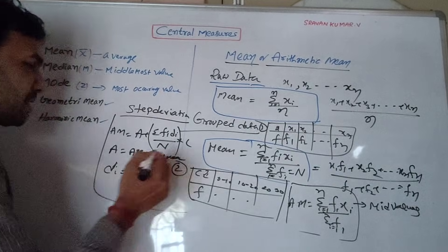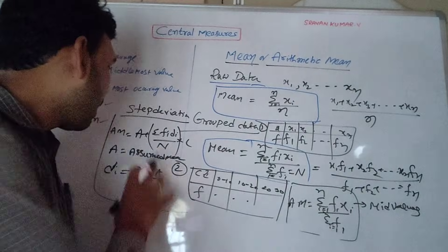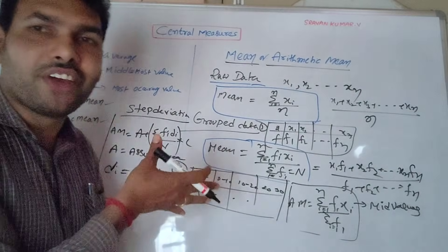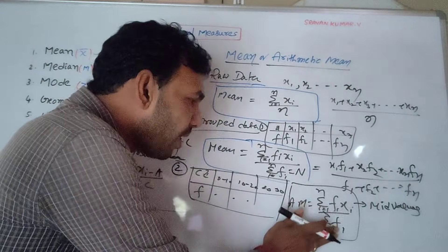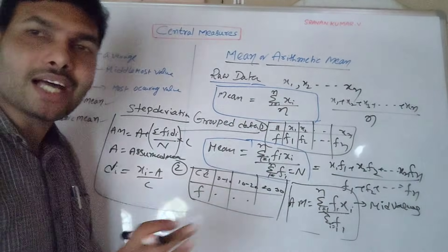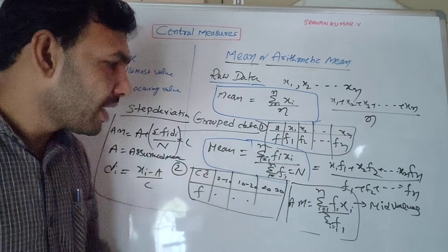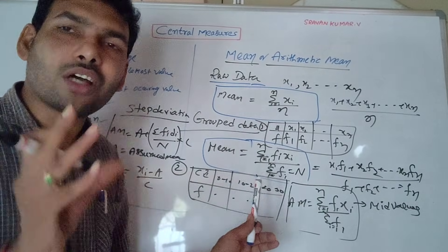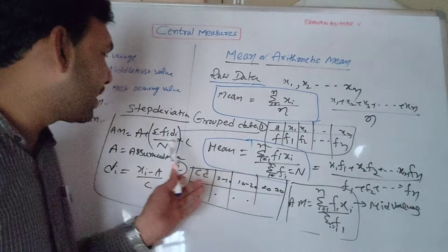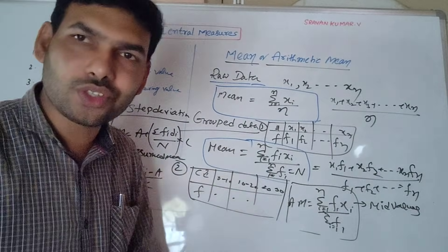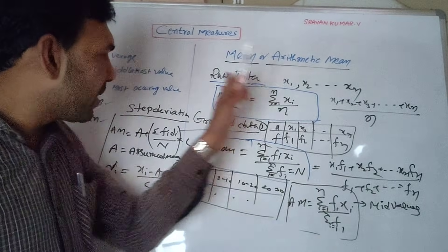The deviation from assumed mean is xi minus A divided by c. This shortcut or step deviation method is used when the xf values are very large, making direct calculation time-consuming. The step deviation method makes the calculation much easier without a calculator.